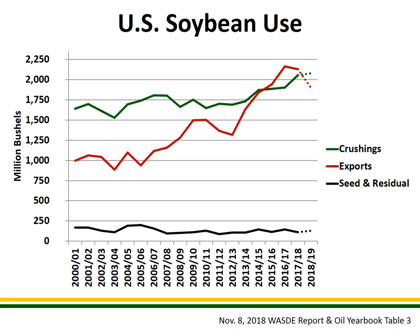Now let's shift from production into looking at consumption or usage. This graph provides historical context for the three major categories of usage that USDA tracks: crushings, export sales, and seed and residual. The green line on top represents crushing — soybeans going into the domestic crush industry, crushed into soybean oil and soybean meal. The red line represents historical export sales, which have been growing fairly rapidly for the last 15 years. The black line on the bottom is seed and residual. The dots on the far right represent the current USDA forecast for each category.